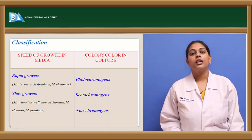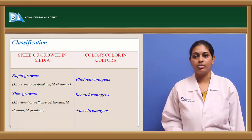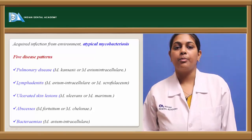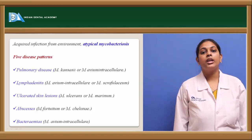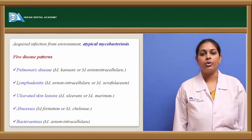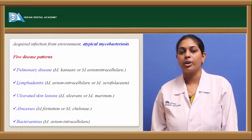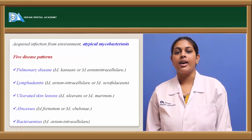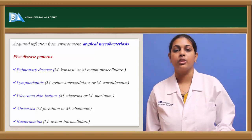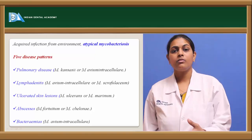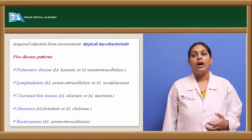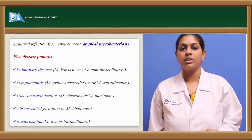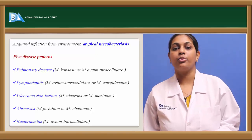Coming to the clinical features of atypical or environmental mycobacteria: the infection is usually acquired from the environment, unlike classical tuberculosis which spreads from person to person by inhalation. Atypical mycobacteria are present within the environment, causing atypical mycobacteriosis. Among them, five disease patterns include pulmonary disease, which usually affects the lung area. The species causing pulmonary disease are Mycobacterium kansasii and Mycobacterium avium intracellulare.